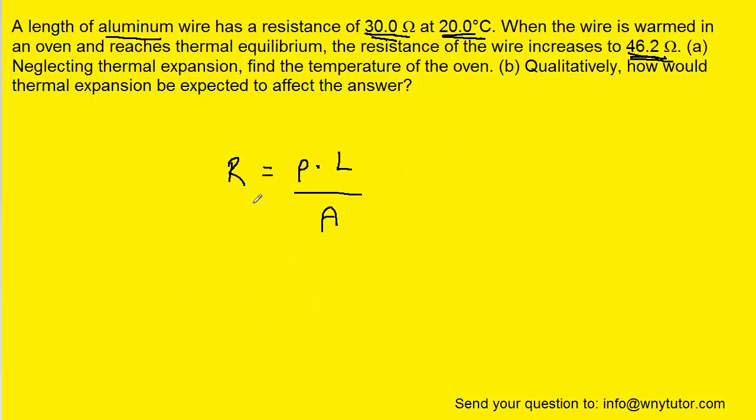Now for part B of the question, we can recall that resistance is equal to a constant times the length of the wire divided by the cross-sectional area of the wire.